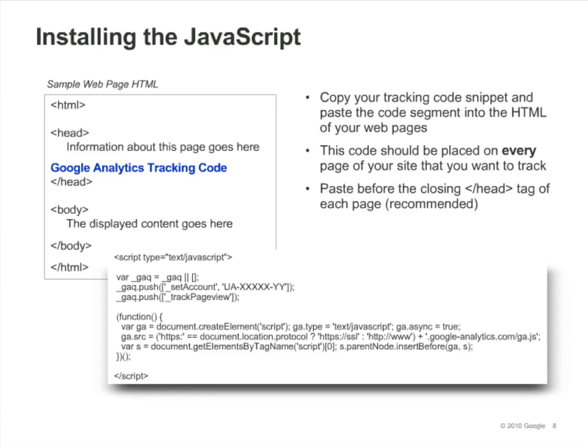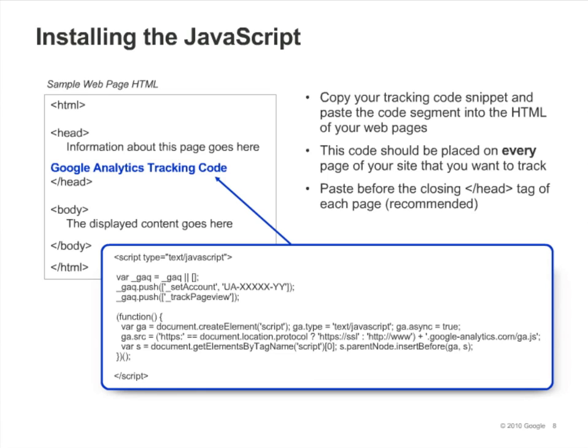To install the JavaScript, copy your tracking code — either the code provided during setup or your customized snippet — and paste it into your page. One of the main advantages of the asynchronous snippet is that you can position it at the top of the HTML document. This increases the likelihood that the tracking beacon will be sent before the user leaves the page. It is customary to place JavaScript code in the head section, and we recommend placing the snippet at the bottom of the head section for best performance. To maintain tracking consistency, it is important that the code is installed across all pages of your site.